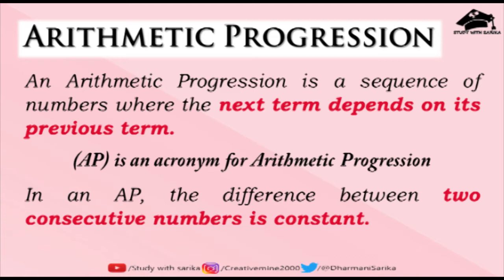Whether you subtract 2 from 1 or subtract 3 from 2, you will get the same number — a fixed number. That is a special thing about arithmetic progression, and we use it to find whether any series or sequence is an arithmetic progression or not. AP is the short form we use for arithmetic progression, since it is a long name.